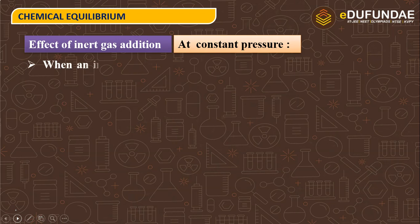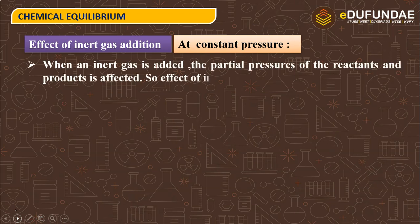At constant pressure, when an inert gas is added, the partial pressure of reactant and product is affected. So the effect of inert gas depends on delta n value.